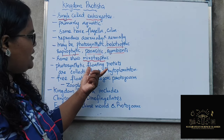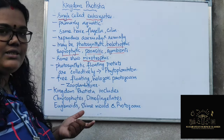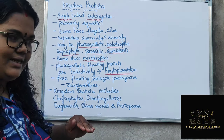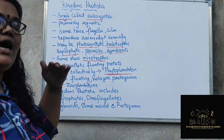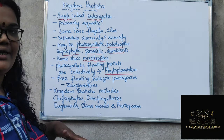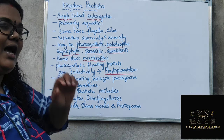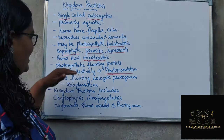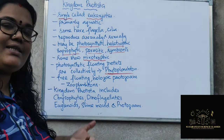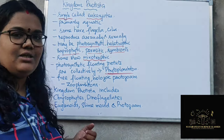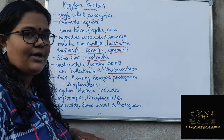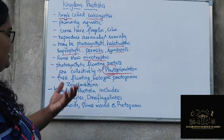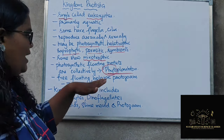The photosynthetic floating protists are collectively known as phytoplanktons. Since most protists are aquatic, they float on the surface of the water and move along with the water current. They utilize sunlight to produce their own energy, which is why they are called photosynthetic floating protists — collectively, phytoplanktons.